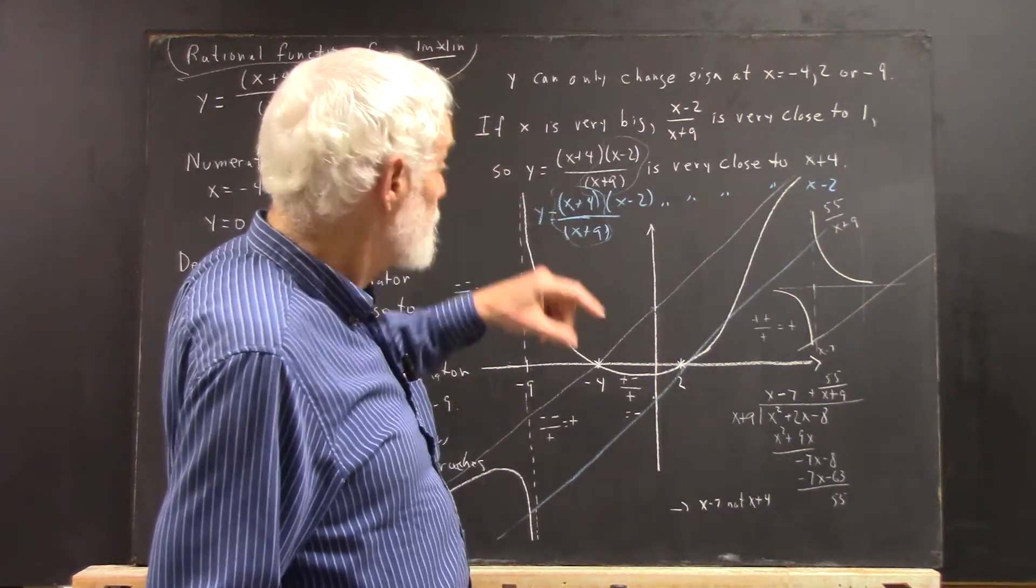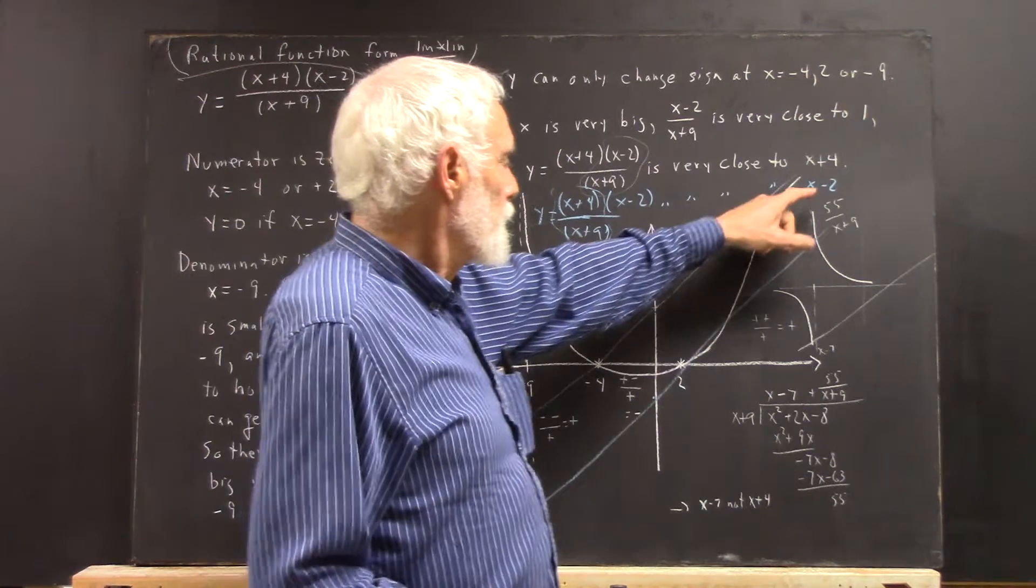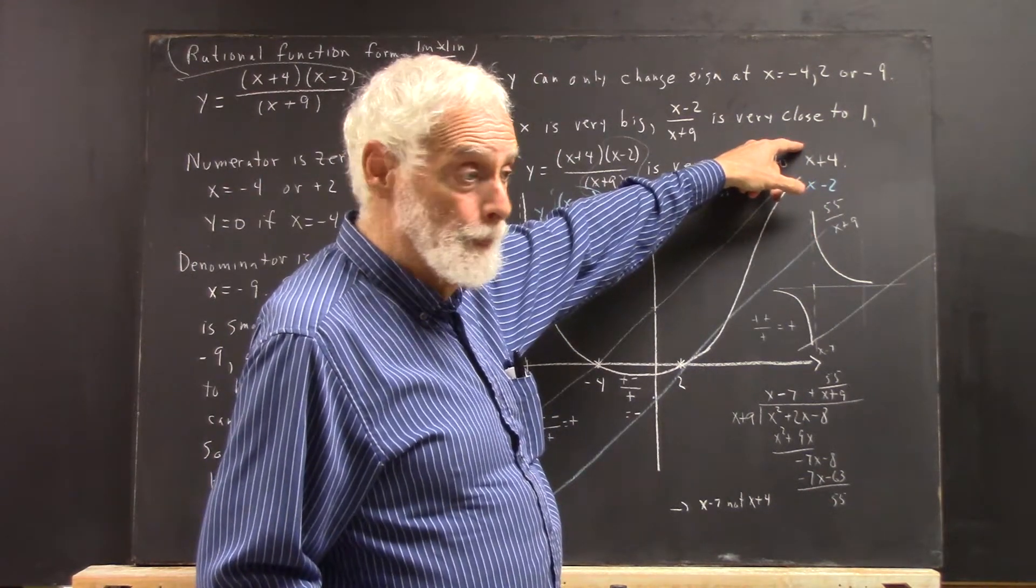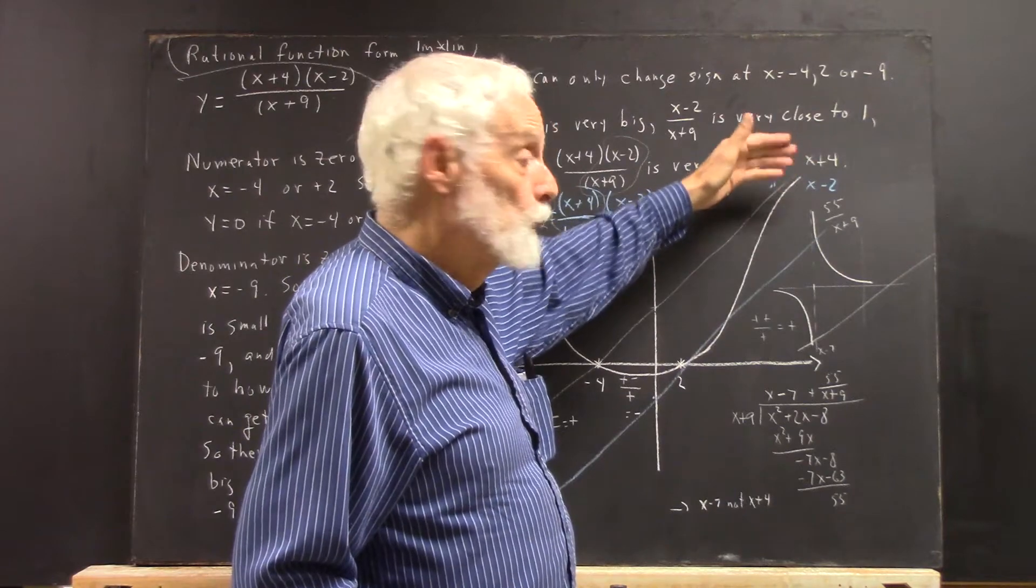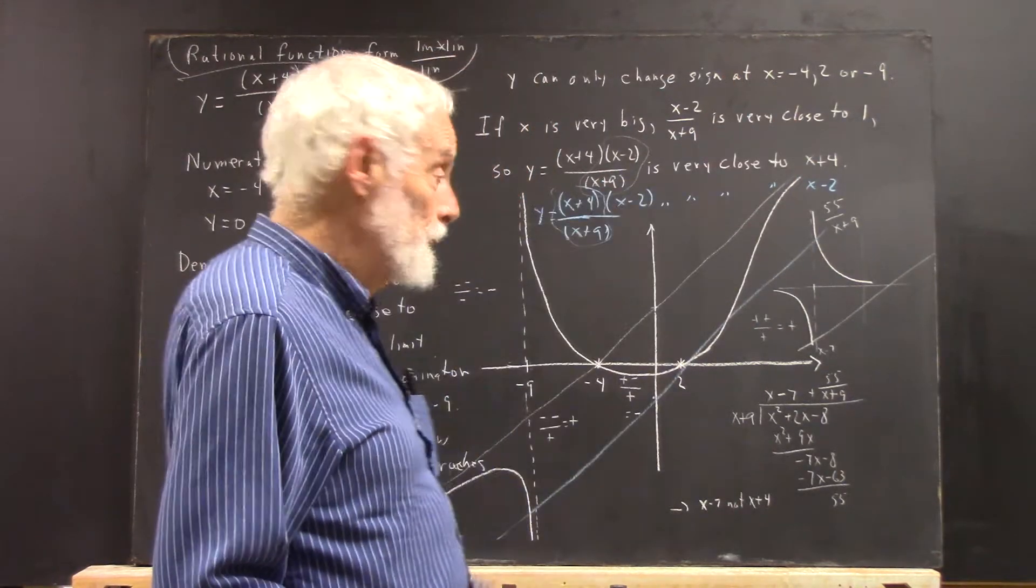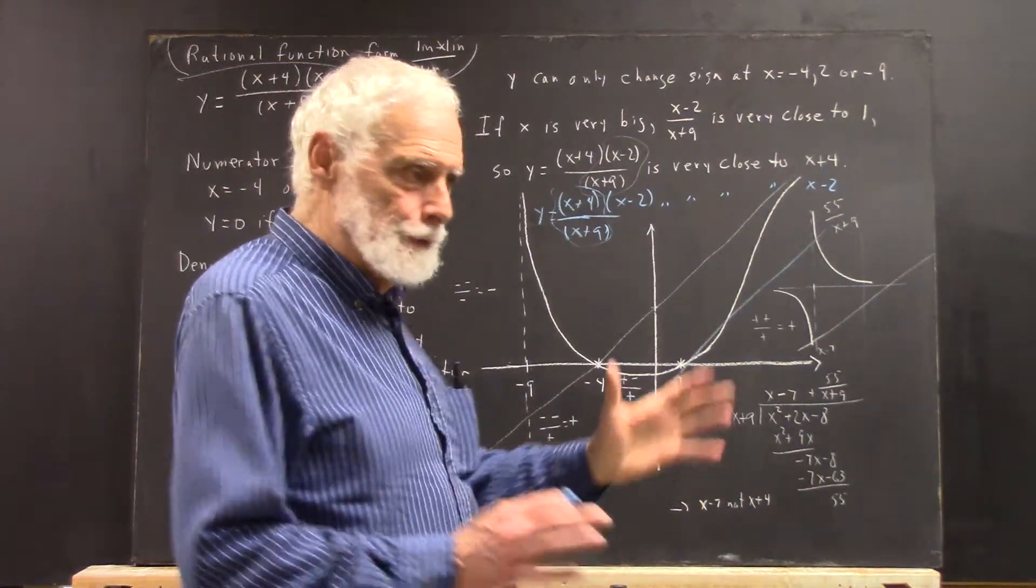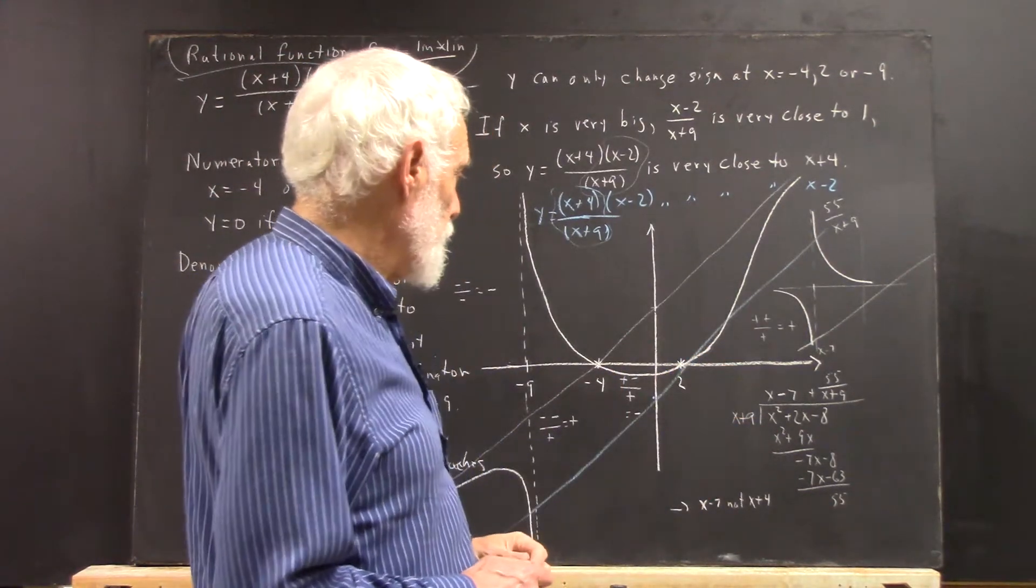Now the point is that we could as well say this is close to x-2 as say it's close to x+4. You might think it's somewhere between x-2 and x+4, but that 9 has something to do with it. We're not going to get into an analysis of that.